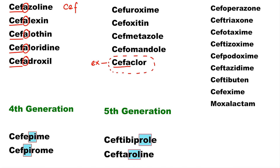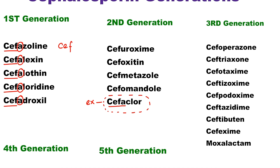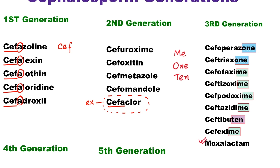Now suppose there is no A after CEF, and there is no PI or ROL in the name — so it cannot be first, fourth, or fifth generation. Now come to the third generation: observe how the name ends. If it ends with 'IME' or 'ONE' or 'IM', it belongs to the third generation. Here you can see Moxalactam — you can easily remember it because it doesn't start with CEF. One exception to remember is Cefuroxime: it ends with IME but belongs to the second generation.